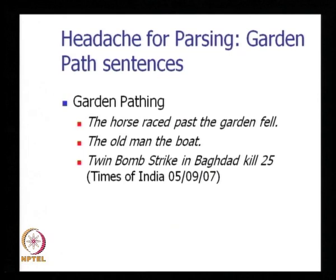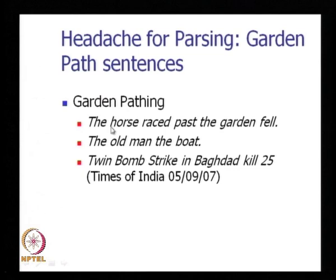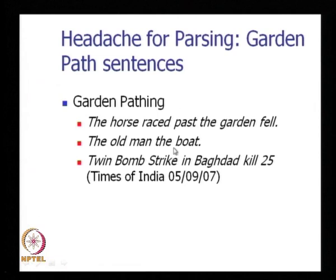Moving further, we come to a particular phenomenon called garden pathing. Garden pathing is a headache for parsing, and there are a special kind of sentences called garden path sentences. Consider these examples: 'The horse raced past the garden fell,' 'The old man the boat,' and 'Twin bomb strike in Baghdad kill 25.' All these sentences have interesting peculiarities.